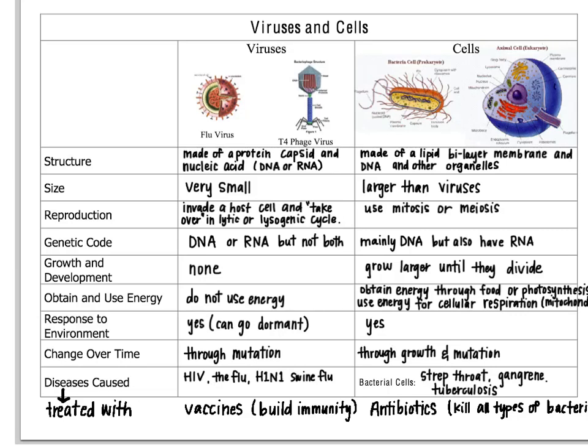On this table we're going to compare viruses and cells. Cells doesn't just include bacteria, it also includes eukaryotic cells like animal and plant cells. So let's start with the structure.